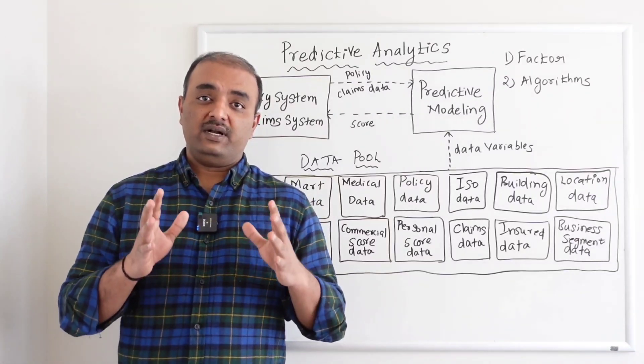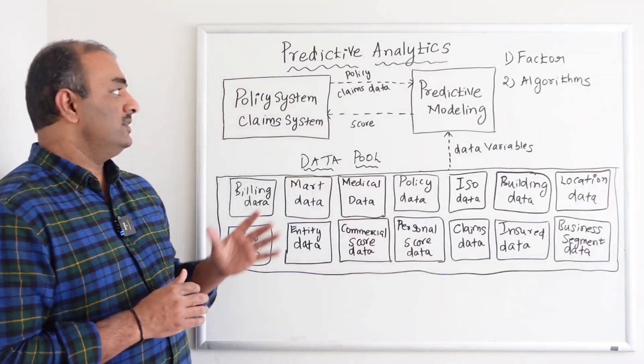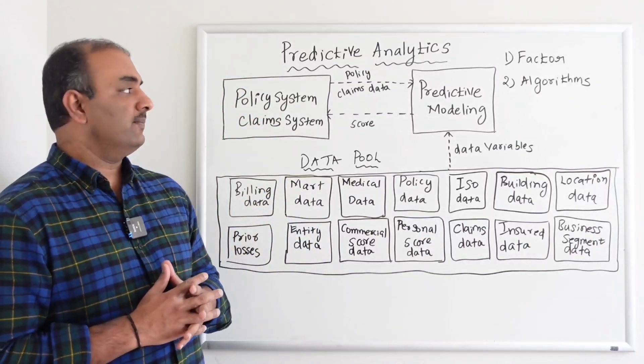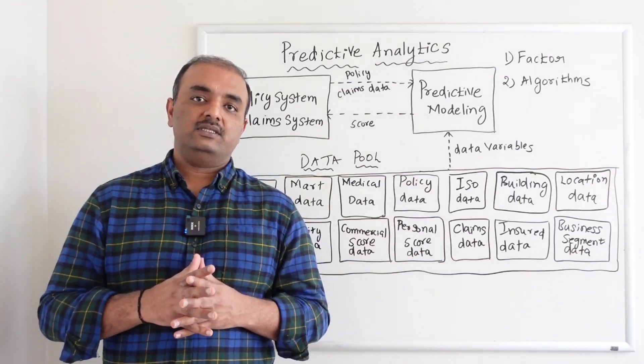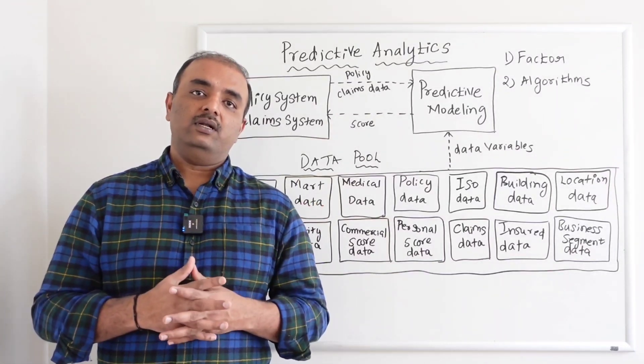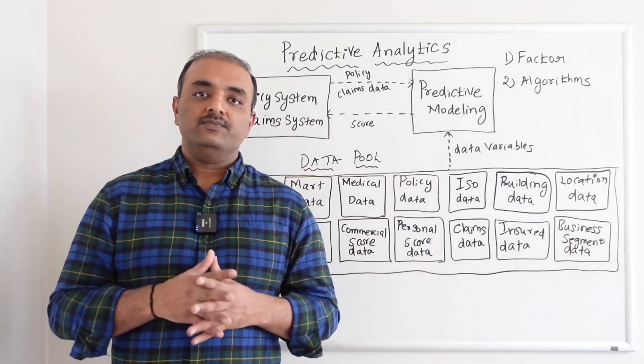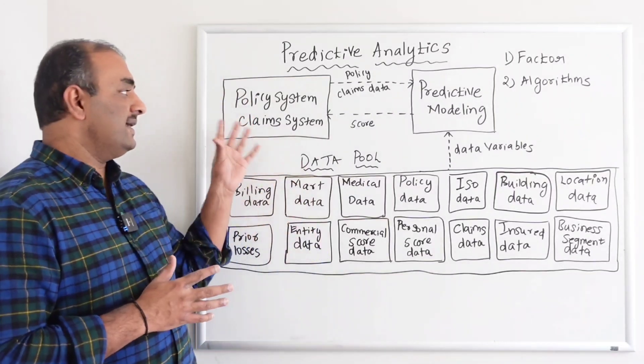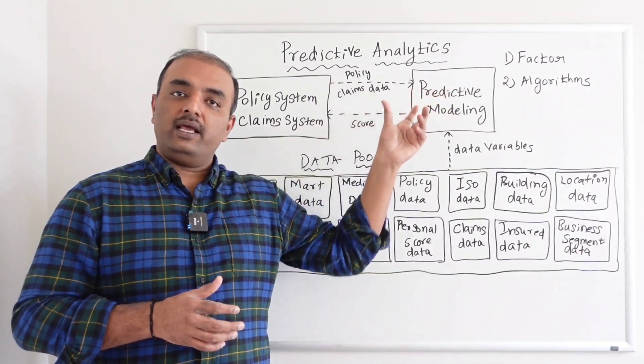They want the system to help them. That's where this predictive analytics plays a major role, even in property and casualty world. Let's take an example. If you see this picture, every time you create a new submission, say if you take a personal auto example with your car or the driver, all that we do is we try to feed that data, policy data, into this predictive modeling system.